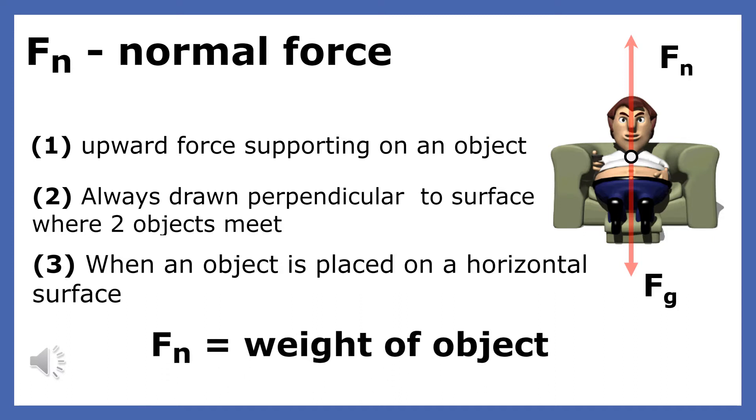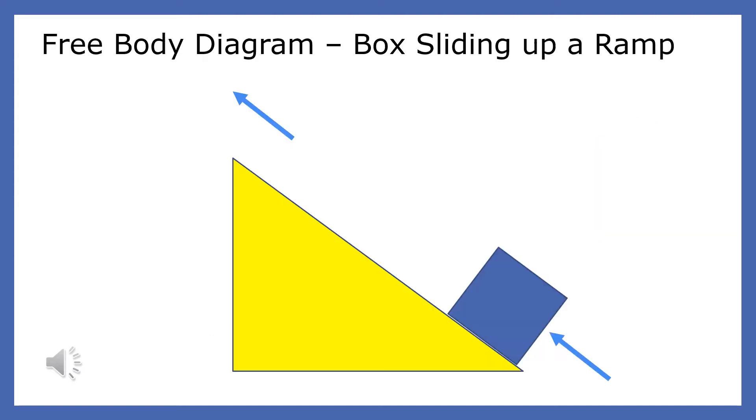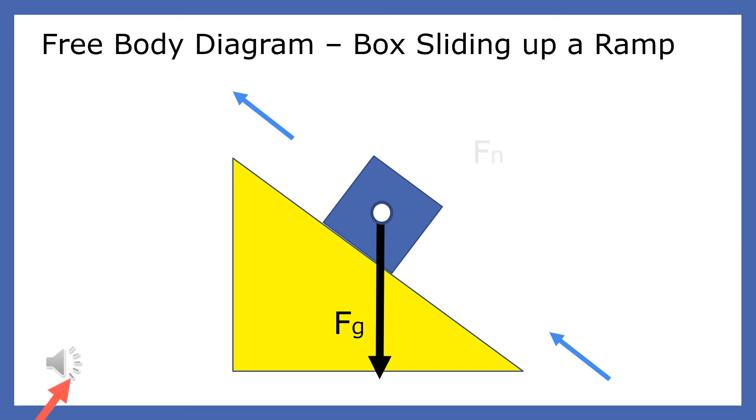When an object is placed on a ramp, the normal force is less than the weight force. What are the forces on the box sliding up a ramp? The box has a weight force pointing straight down. The ramp exerts a supporting force on the box, this is called the normal force. The last force on the box is friction. Since the block is sliding up the ramp, the friction force is parallel to the ramp and it points in the opposite direction of the box's motion.